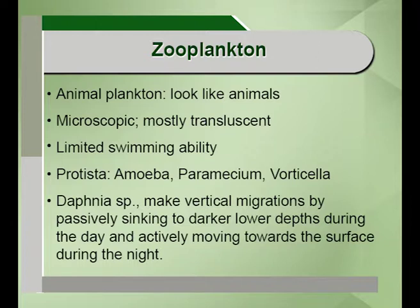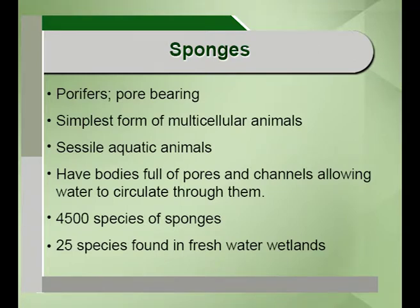Zooplankton are animal planktons that float in the waters. They may or may not have a flagella, are microscopic and look translucent. Members of the Protista such as amoeba, paramecium and vorticella are found in these lentic standing water zooplankton communities. The Daphnia species are well known for making vertical migrations — moving to the benthic regions away from sunlight during the daytime and to the surface during night. There are 4,500 species of sponges globally and 25 species of sponges are found in freshwater wetlands alone.